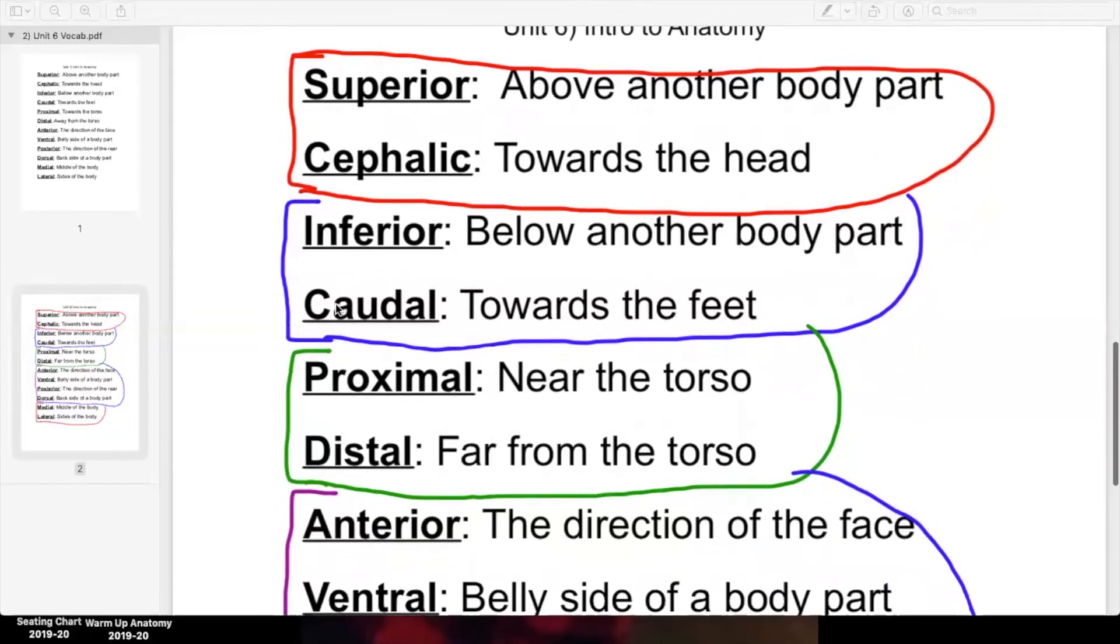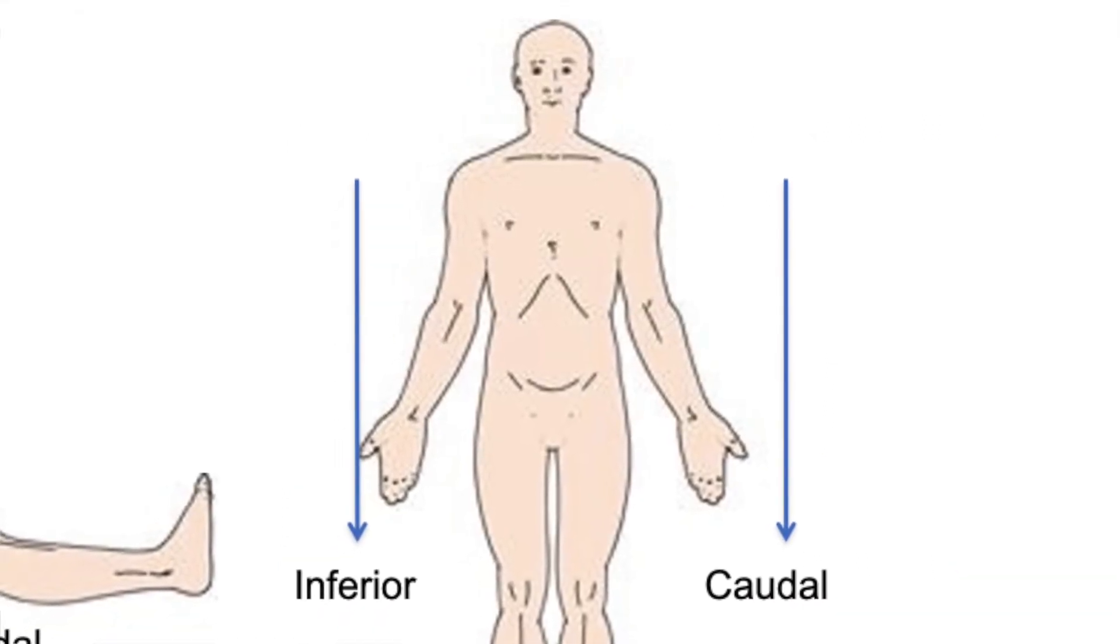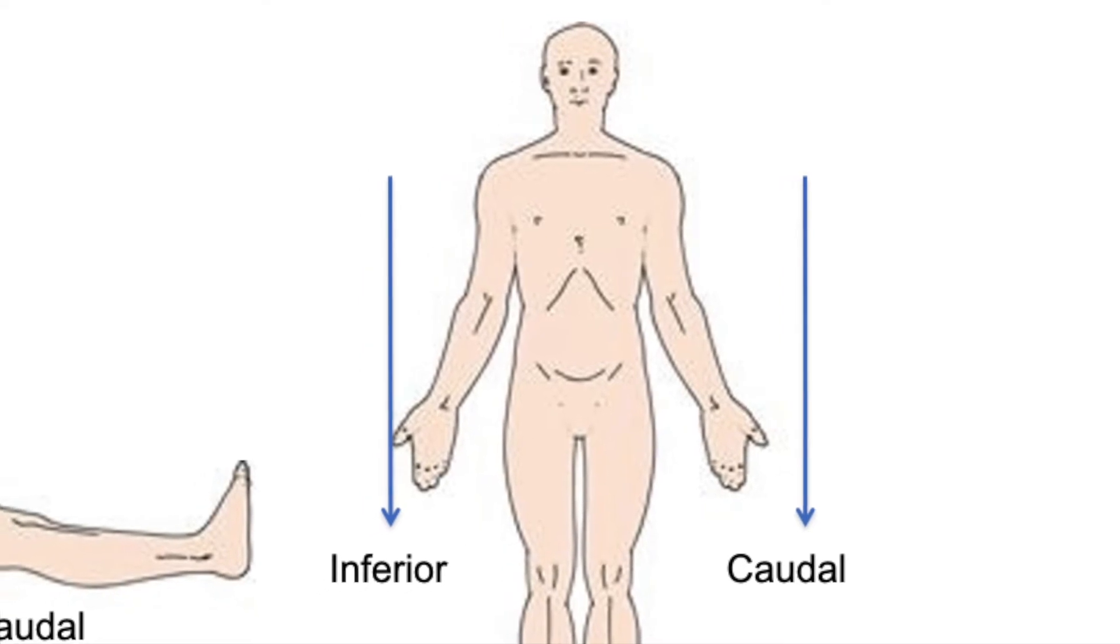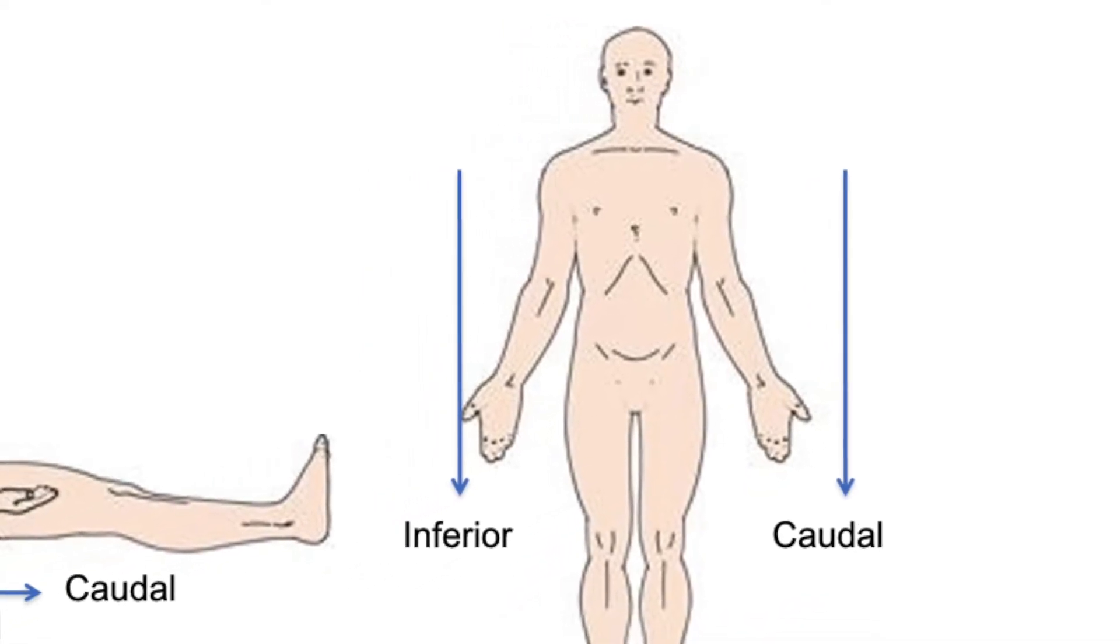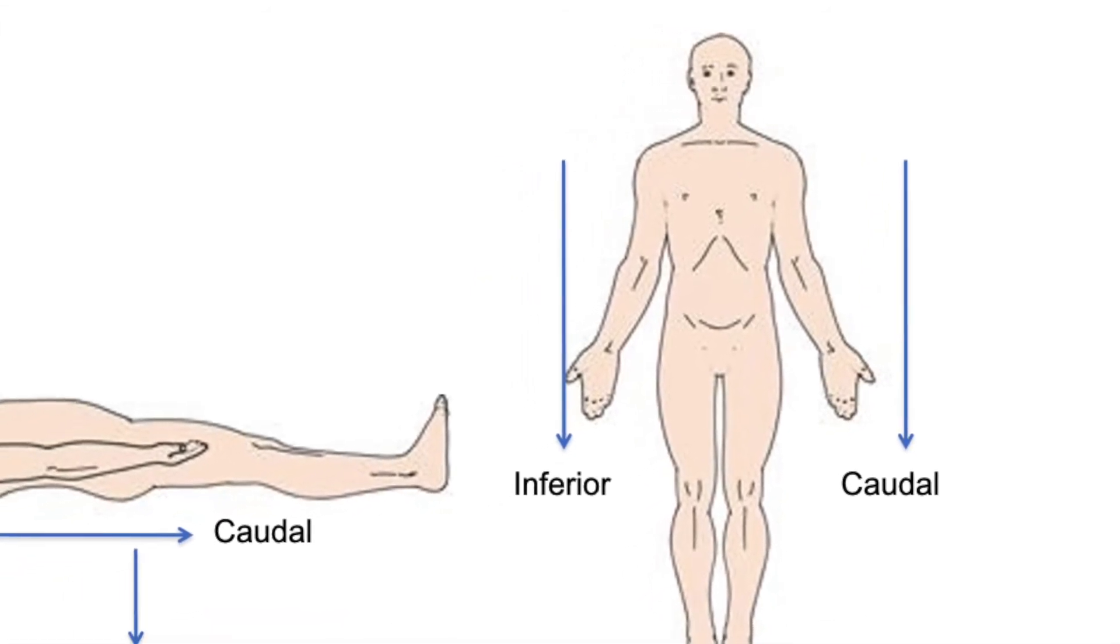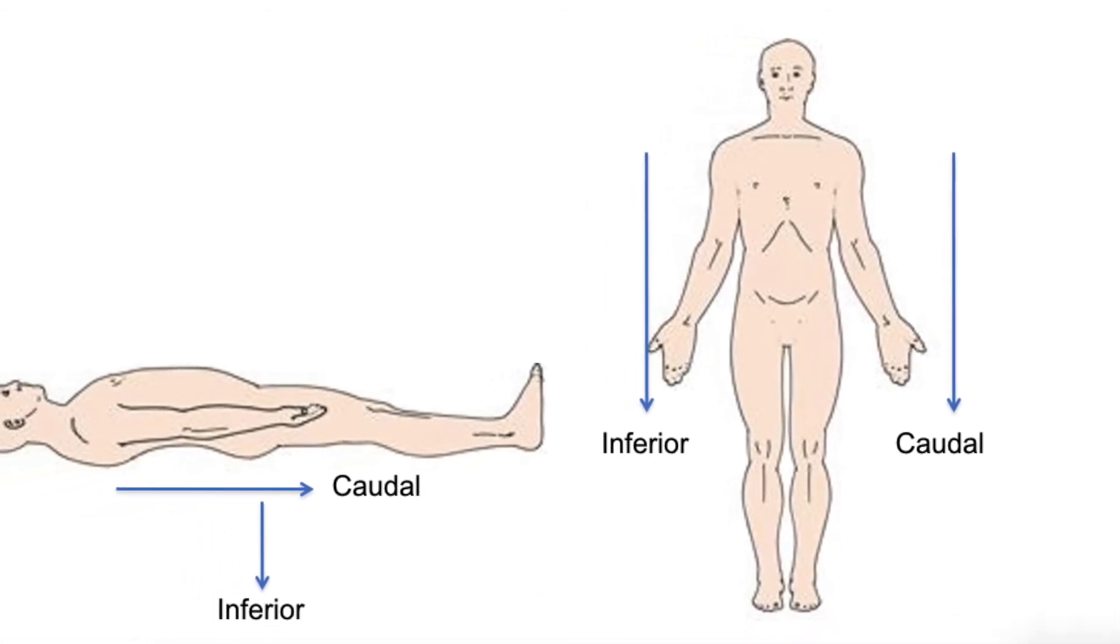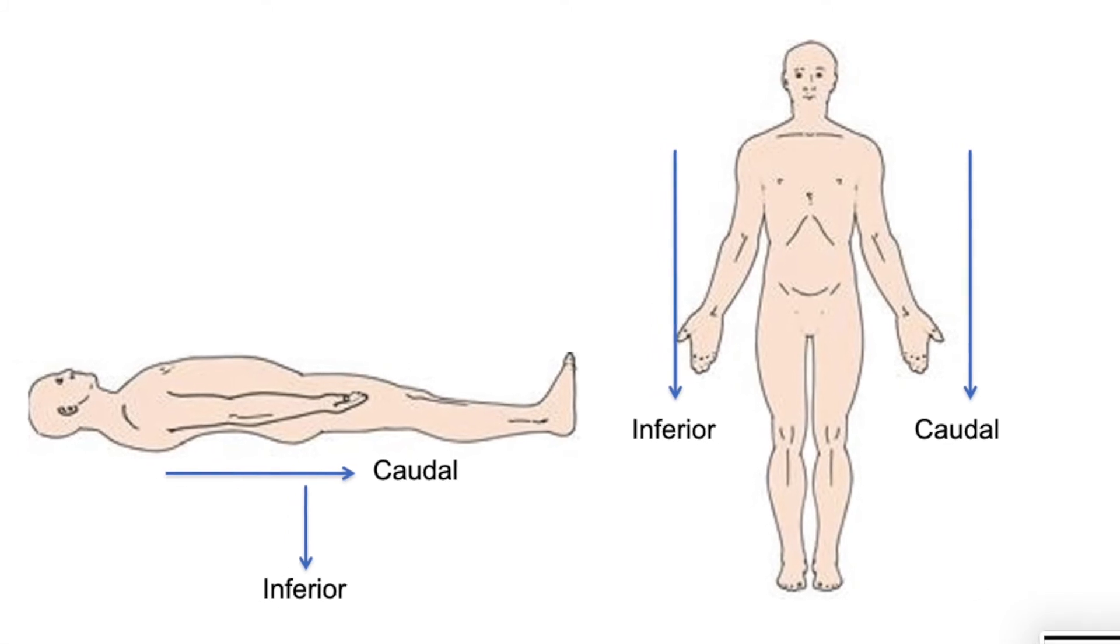Inferior and caudal are the exact same thing, except downward. Inferior means below another body part. Caudal means towards your feet. Same explanations though. Inferior always means below. So if you are standing up straight, then your belly button is inferior to your chest muscles. But if you're standing on your hands, then your chest muscles are inferior to your belly button. But caudal means towards your feet. Your belly button is always more caudal than your chest muscles are, no matter what position you're in. Because your belly button will always be closer to your feet than your chest muscles.